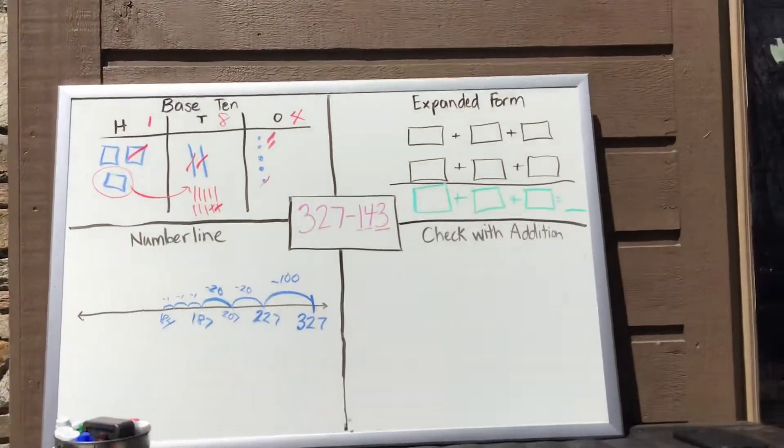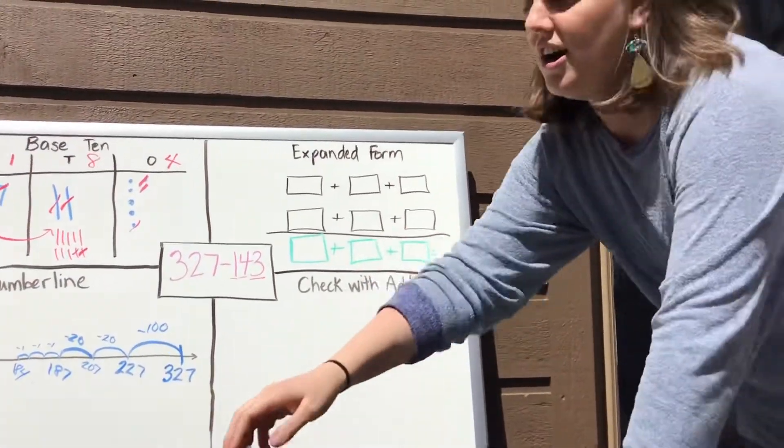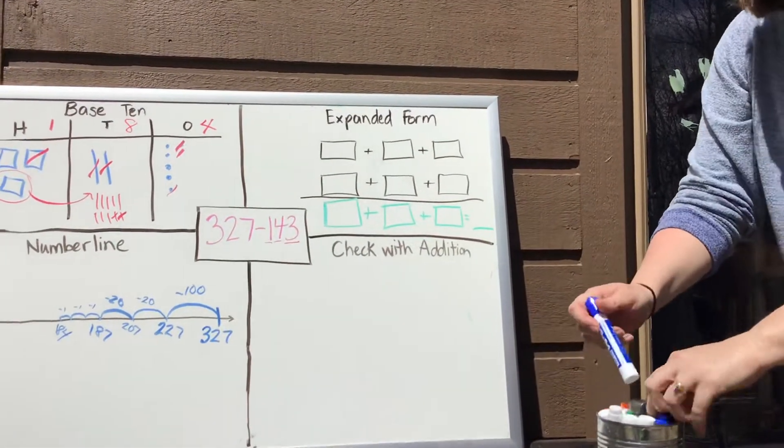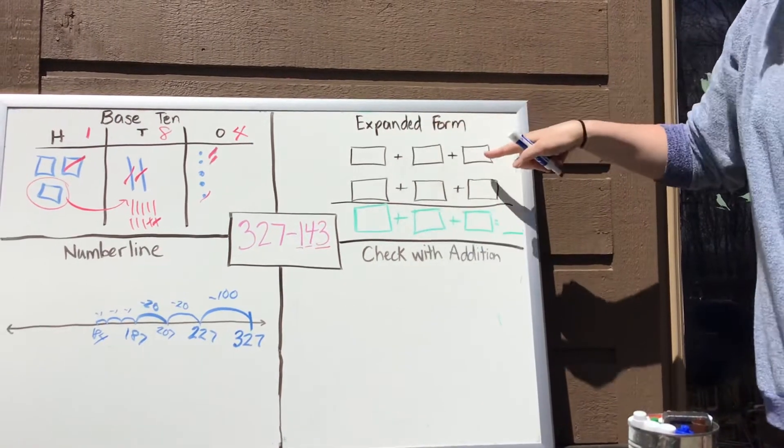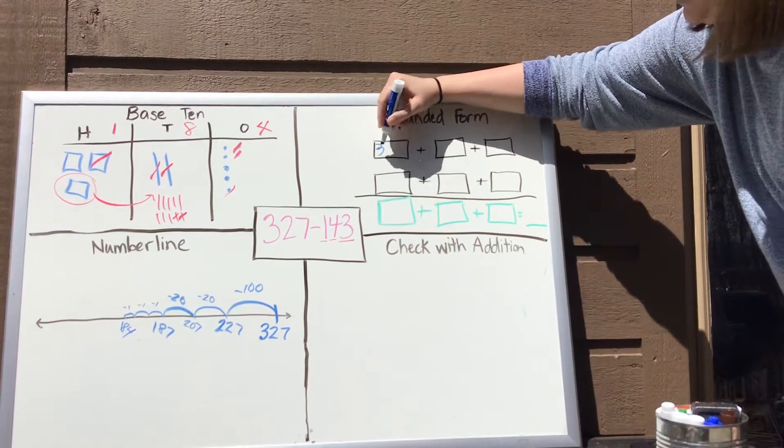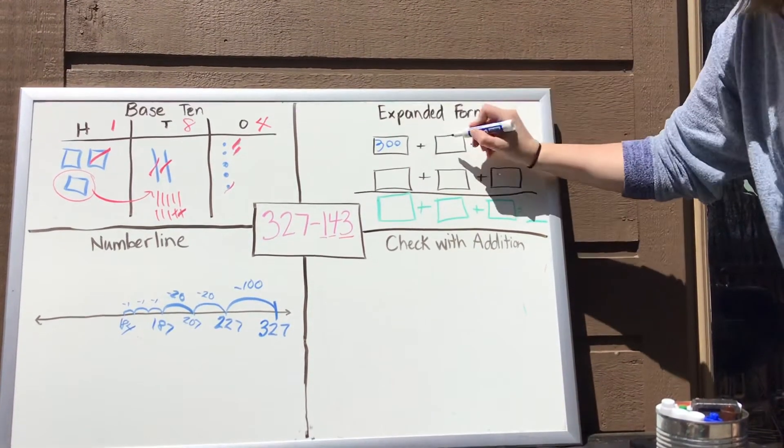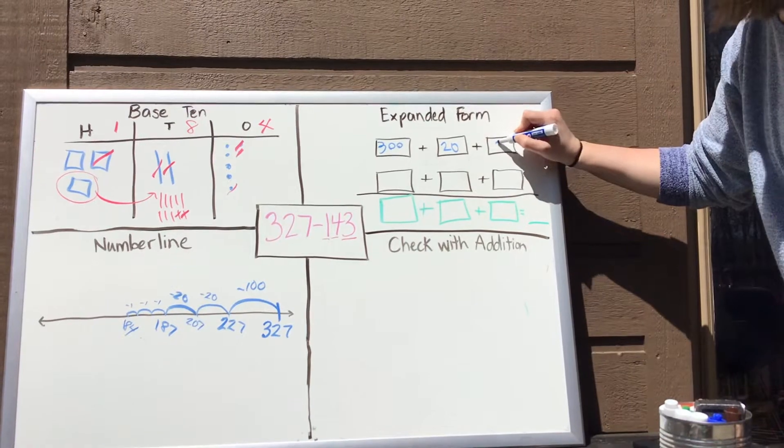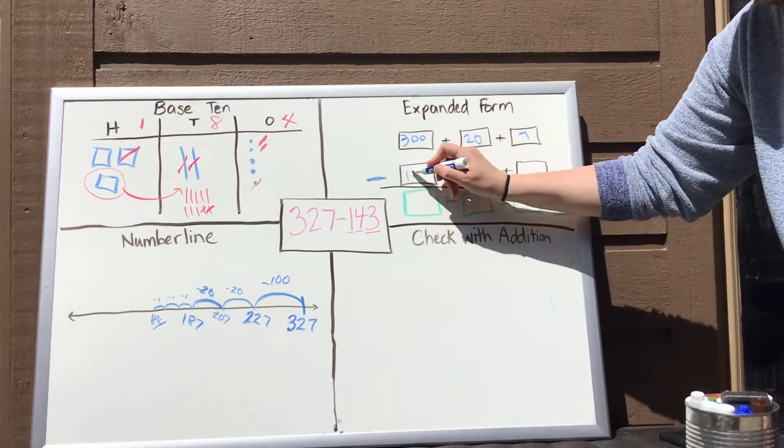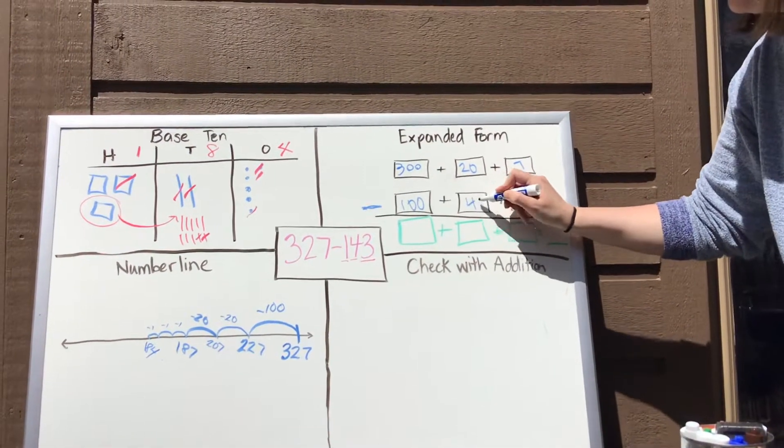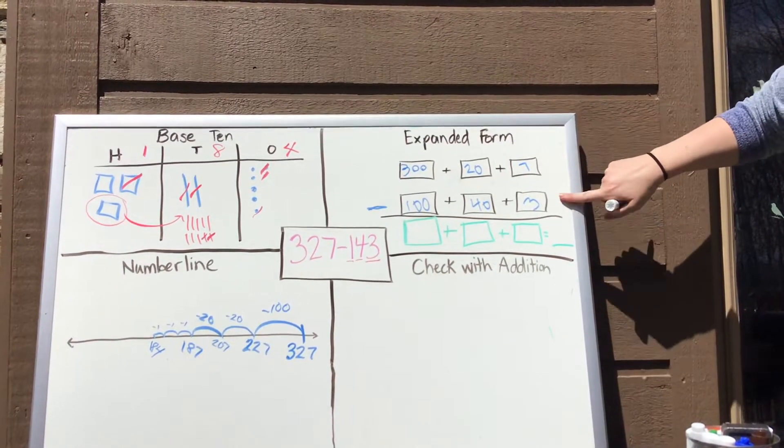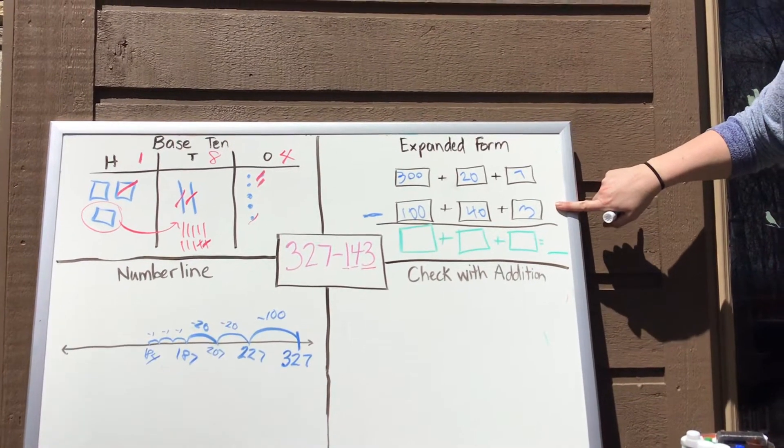All right. Let me switch around over here. And we're going to work on some expanded form. And this is the strategy that we were talking about yesterday. Okay, so we're going to start by doing expanded form for 327. So we're going to say 300 plus 20 plus 7. And we're going to be subtracting here 100 plus 40 plus 3. So this is expanded form for 327. And this is expanded form for 143.